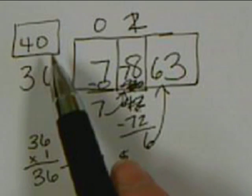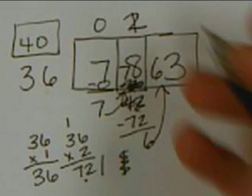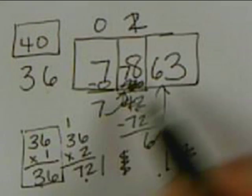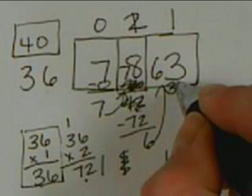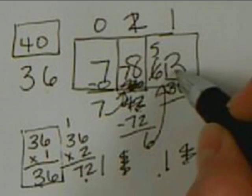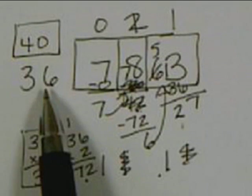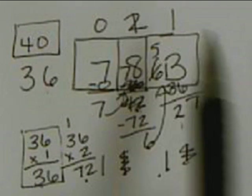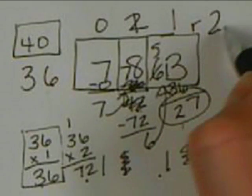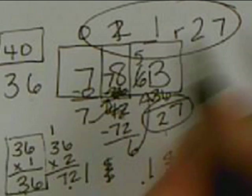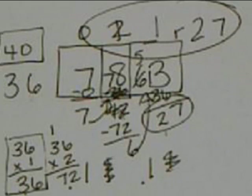Now we have 63. Again we use 40 to estimate: count by 40s — 40, 80 — 80 is too much, so we go back. We try 1 times 36 is 36 and subtract: 13 minus 6 is 7, 5 minus 3 is 2 — we get 27. 27 is less than 36, so this is correct. Our remainder is 27, and our quotient for this problem is 21 remainder 27.